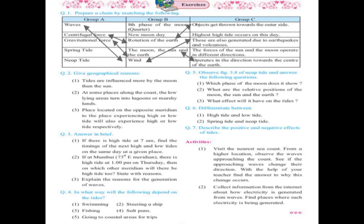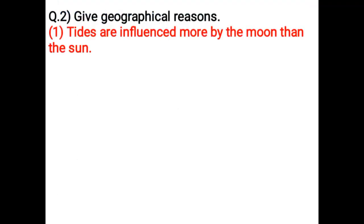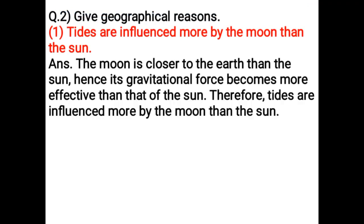Gravitational force operates in the direction towards the center of the earth. Spring tide occurs on the new moon day, when the highest tide occurs. Neap tide occurs on the quarter phase of the moon, when the forces of the sun and the moon operate in different directions. Tides are influenced more by the moon than the sun because the moon is closer to the earth, making its gravitational force more effective.